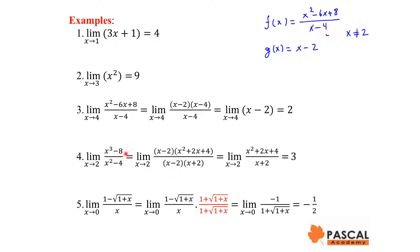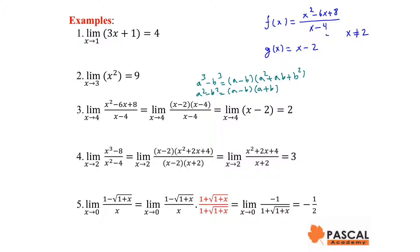Example 4: the limit of (x³ - 8) / (x² - 4) as x approaches 2 is the same as the limit of (x - 2)(x² + 2x + 4) divided by (x - 2)(x + 2). Using the difference of cubes formula: a³ - b³ = (a - b)(a² + ab + b²), and the difference of squares: a² - b² = (a - b)(a + b). Since x approaches 2, x cannot be 2, so x - 2 is not 0. Therefore, we can divide both numerator and denominator by x - 2, and our limit becomes the limit of (x² + 2x + 4) / (x + 2) as x approaches 2.